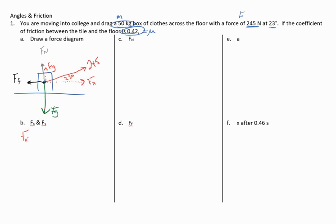How do I find those? Remember that I would find those by doing Y sine because X is cosine. I'm going to take 245 times the cosine of the angle 23, and 245 times the sine of the angle 23. Calculate those. I'm going to get 225.5 newtons and 95.7 newtons. This value here is the 225.5, and this value is 95.7.